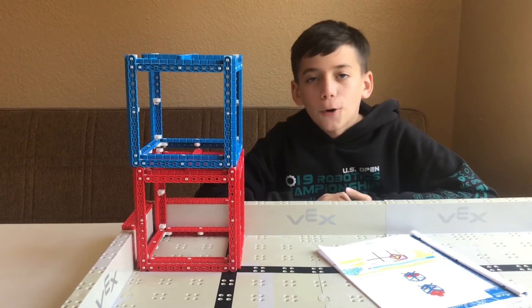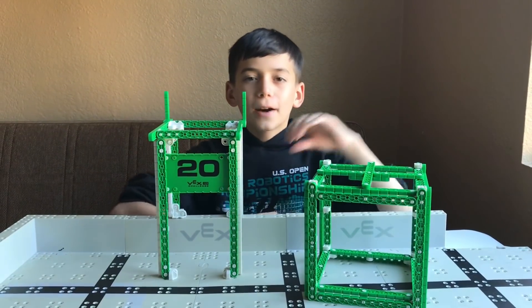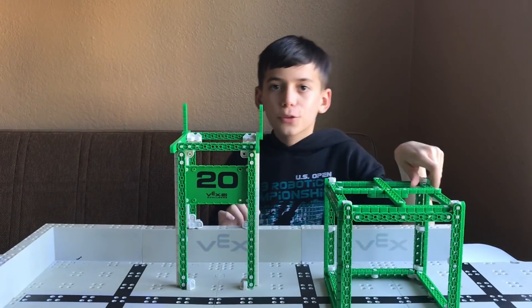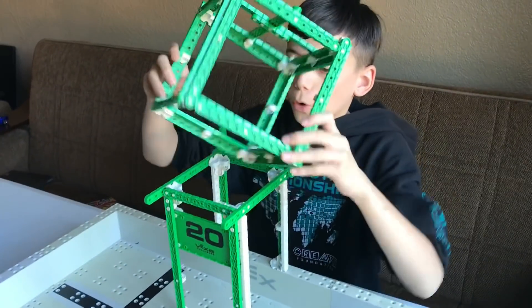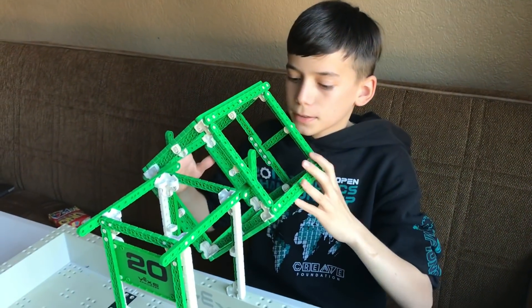All right guys, now we are going to be talking about the scoring with the cube on top of the platform. There are three options: you can place it properly like this, like that, or like that. Or you can place it like this or through the middle right here like this, or right here.